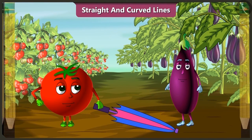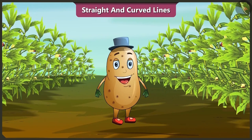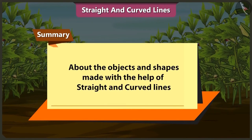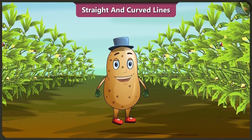Friends, today we learned about the objects and shapes we can make using straight and curved lines. In the next video, we will learn about the horizontal line (sleeping line), vertical line (standing line), and slanted line.